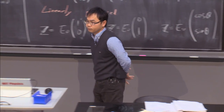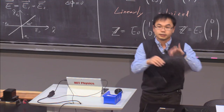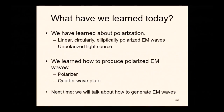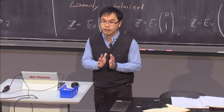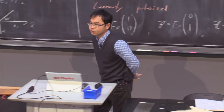Today we learned about polarization: linearly polarized, circularly polarized, and elliptically polarized electromagnetic waves, as well as unpolarized light sources. We learned how to produce polarized electromagnetic waves with a polarizer. We didn't cover the quarter-wave plate yet — that's next time. We'll also discuss how electromagnetic fields are actually generated, which will happen after the midterm next week. Thank you very much.